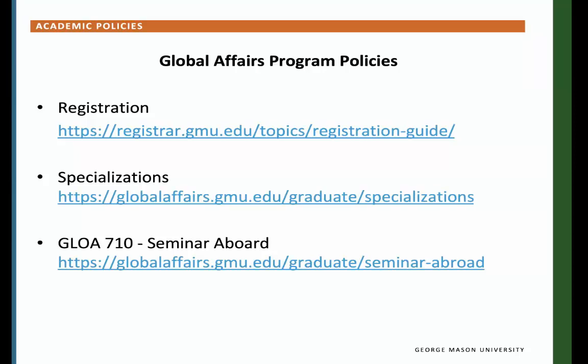GLOA 710 Seminar Abroad. This is a two-week seminar abroad trip designed and led by Mason Global Affairs faculty. It is offered in the winter and summer with set locations for each. It features lectures by local scholars and professionals and site visits to important organizations and government agencies. You will need to register for GLOA 710 with the help of the Mason Global Abroad Office. If you wish to study abroad in addition to the required GLOA 710 course, you may use up to three credits towards your specialization, but you must first receive permission from the program.